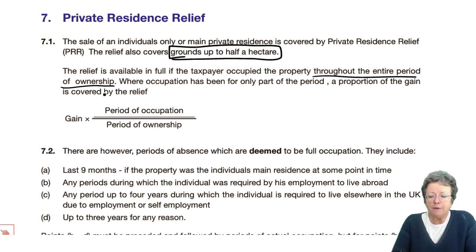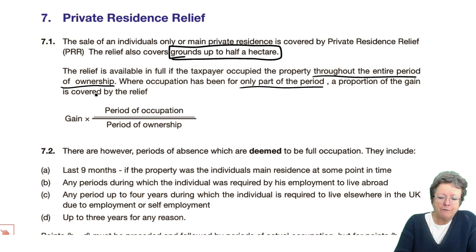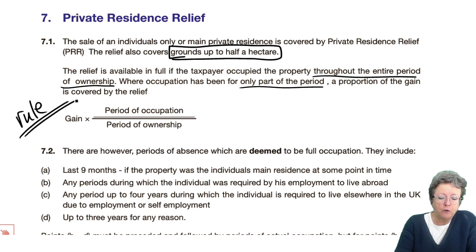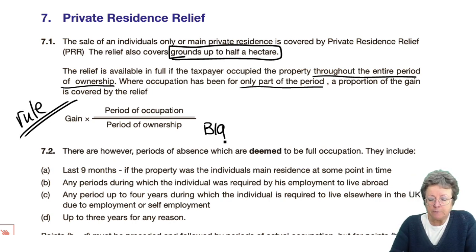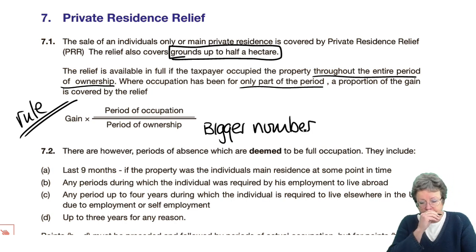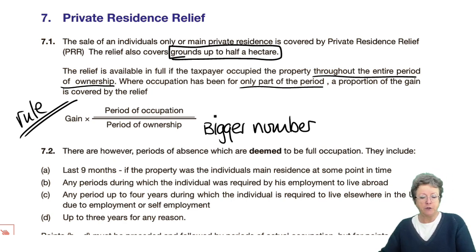However, if you've only lived there for part of the time, then you will pay tax on a proportion of it. So we will have a formula: whatever the gain is, the bigger figure — the whole period of ownership — is on the bottom, and the actual period of occupation is on the top.